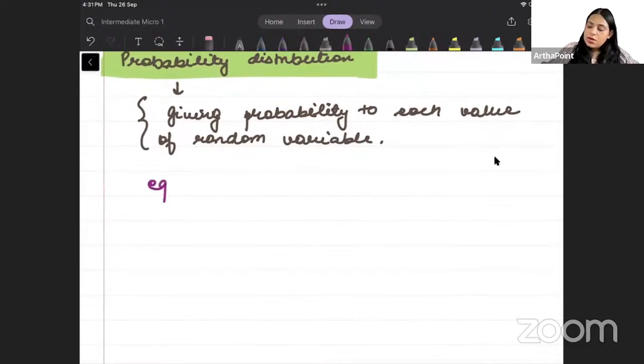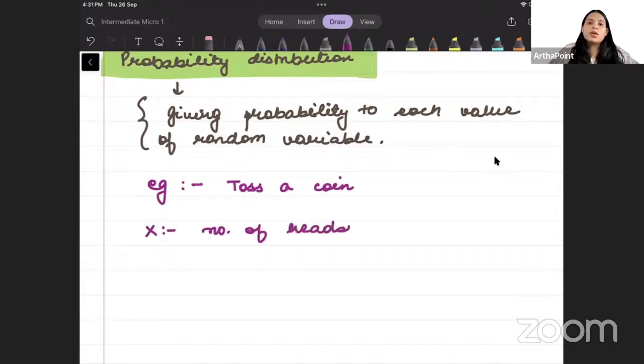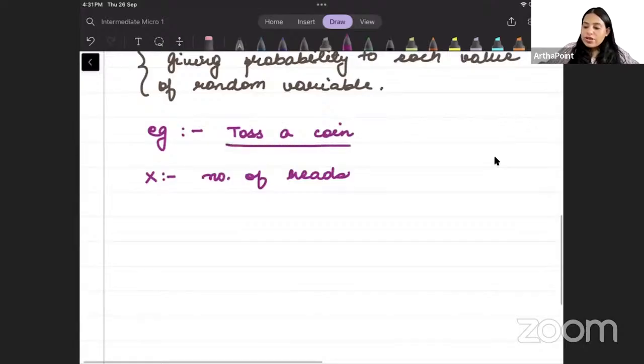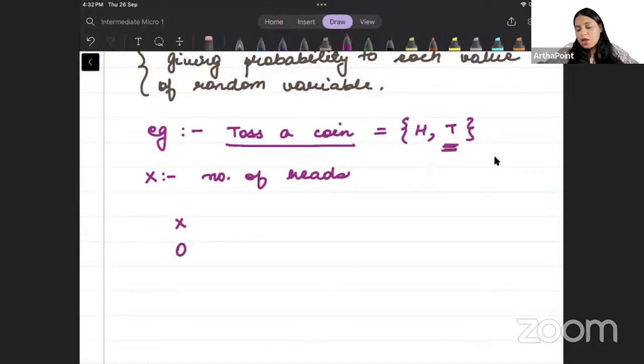What is probability distribution? Probability distribution means giving probability to each value of random variable. For example, when we toss a coin, let's say that x represents the number of heads. When you toss a coin, either you will get head or tail. The number of heads can be either 0 if you get a tail, or the number of heads will be 1.